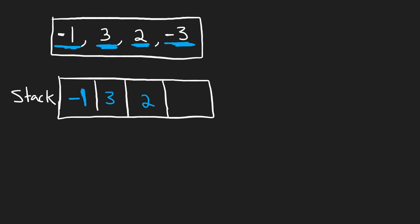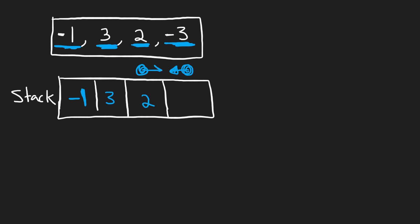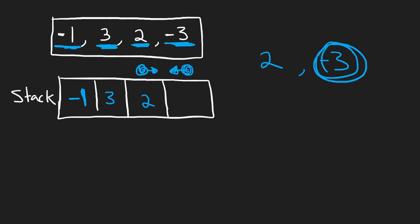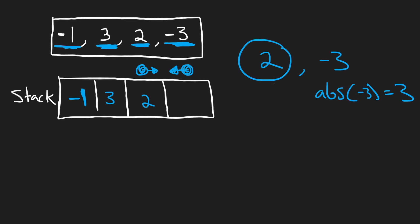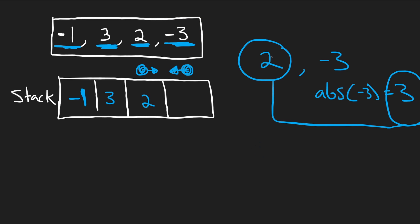Now we get to another node that's negative, meaning it's moving to the left. Let's look at the top of our stack — it's 2, which is moving to the right. So clearly there's going to be a collision. We're comparing 2 to negative 3, and really we want the absolute value of negative 3, which is 3. Since 3 is greater than 2, the 3 is going to win, so we have to destroy 2.